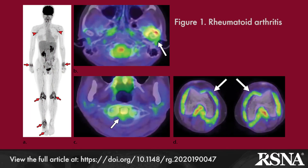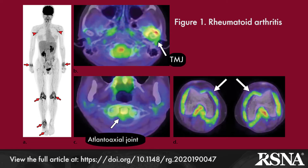Beginning with rheumatoid arthritis and allied disorders, FDG uptake correlates with pannus volume as seen on MRI in affected patients and with clinical symptoms in affected joints, showing a typical distribution of inflammatory changes.